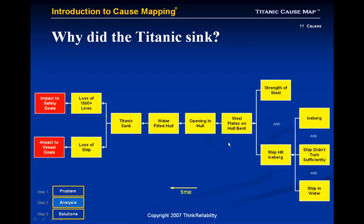If we ask why the ship hit the iceberg, some people say the iceberg is the cause — because if the iceberg wouldn't have been there, the ship never could have hit it. The same argument applies to the ship being in the water. But you can still have an iceberg and the ship in the water and not hit the iceberg if you just turned in sufficient time. So some people may argue the ship not turning sufficiently is the cause. In reality, it's all three causes that are required to produce that effect, and the cause map easily shows this and accommodates those different points of view.